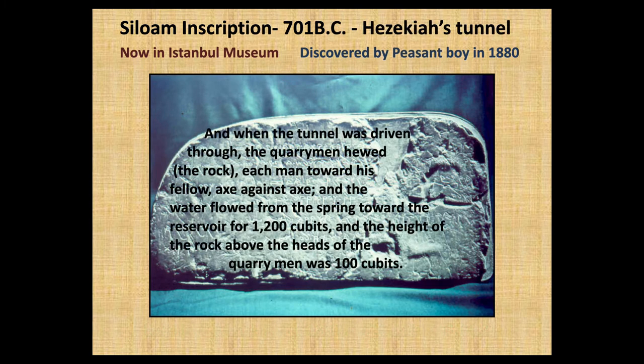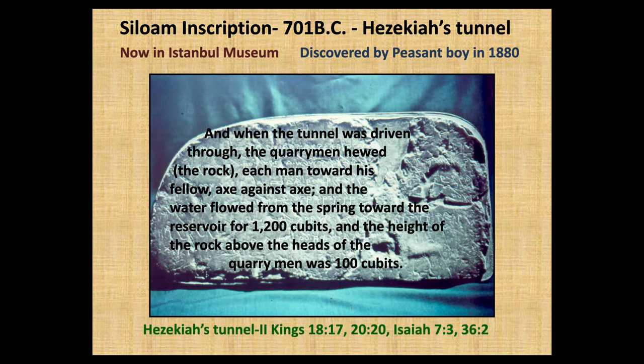Part of the Siloam inscription reads as follows: 'And when the tunnel was driven through, the quarrymen hewed the rock, each man toward his fellow, axe against axe. And the water flowed from the springs toward the reservoir for twelve hundred cubits. And the height of the rock above the heads of the quarrymen was one hundred cubits.'